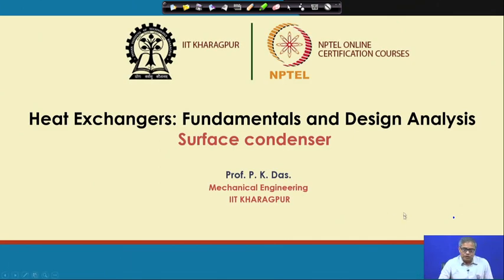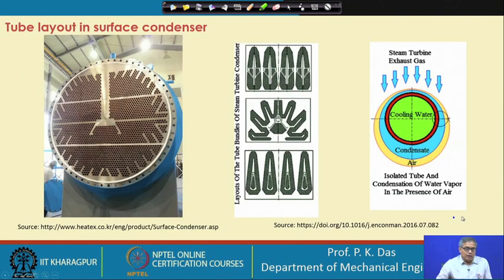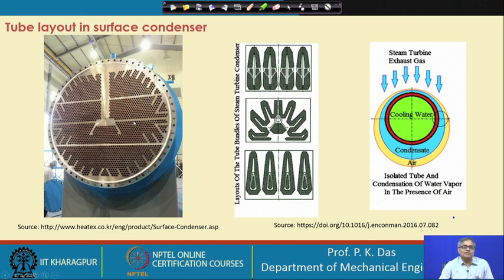This is the current lecture on surface condensers. I am showing a typical surface condenser of a steam power plant. Looking carefully at this diagram, you can see the tube layout. First, the tubes are laid in a very dense configuration, and the arrangement is not in-line but staggered — this is very important. In a steam power plant surface condenser, there are different tube layout patterns, some of which are shown here from published literature.